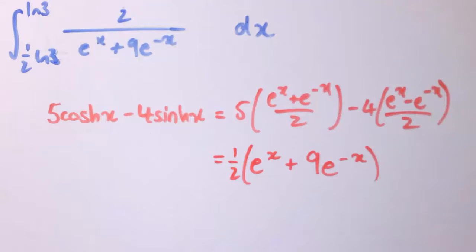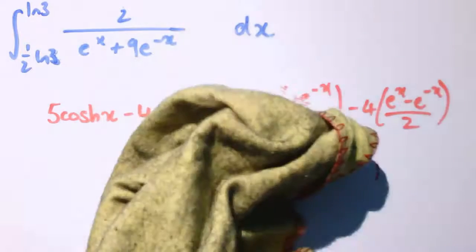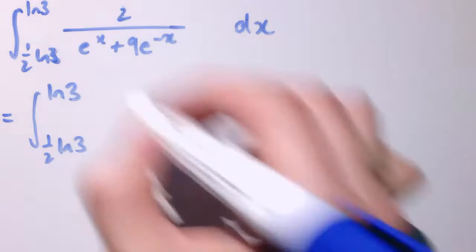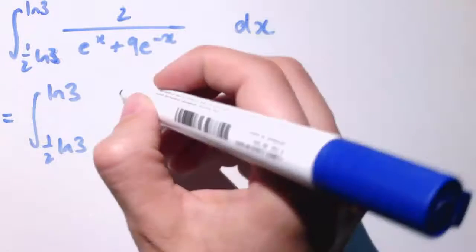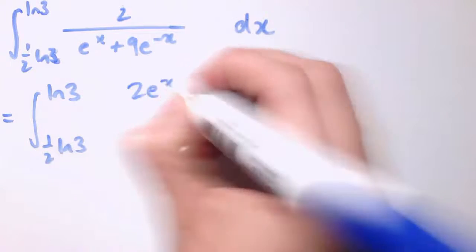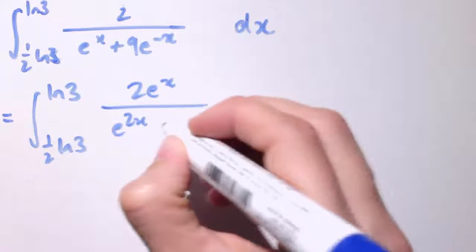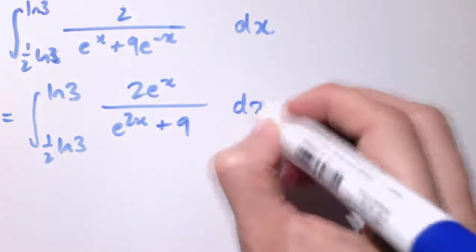We can get rid of all of our working in red here. And now we can just apply the same trick as before, multiplying top and bottom by e^x. So that's 2e^x over e^(2x) plus 9 dx.